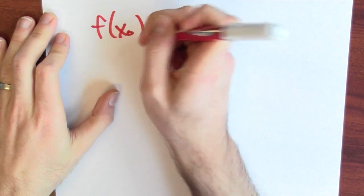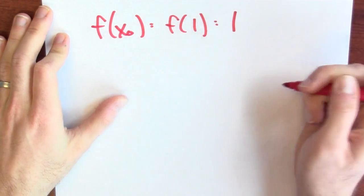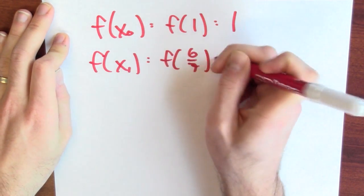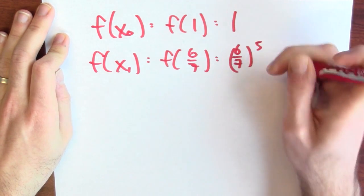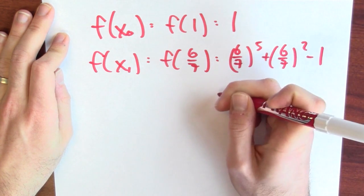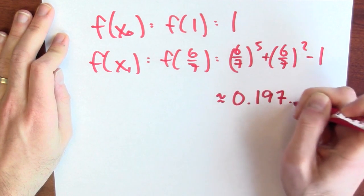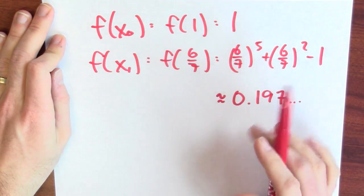So that's my new guess. And 6 sevenths really isn't that bad of a guess. So my original guess, x0, that was 1 and f of 1 was just 1. My next guess, x sub 1, that was 6 sevenths. And what's f of 6 sevenths? Well, that's 6 sevenths to the fifth plus 6 sevenths squared minus 1. That turns out to be about .197. So certainly, this 6 sevenths is a better guess than 1.